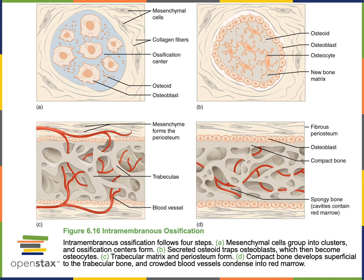Following the formation of this basic spongy bone with trapped blood vessels, the final step of intramembranous ossification is to form a periosteum and a layer of compact bone that surrounds the deep spongy bone. In this process, the connective tissue surrounding the spongy bone differentiates, forming periosteum as mesenchymal cells differentiate into osteogenic cells and those osteogenic cells differentiate into osteoblasts. The osteoblasts then secrete osteoid that becomes calcified, forming a structure of compact bone surrounding the spongy bone.